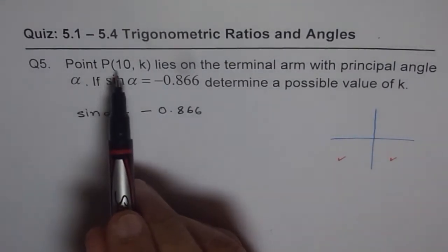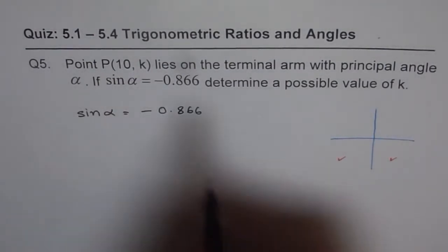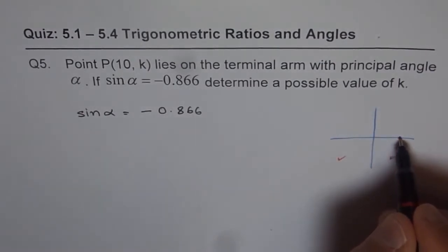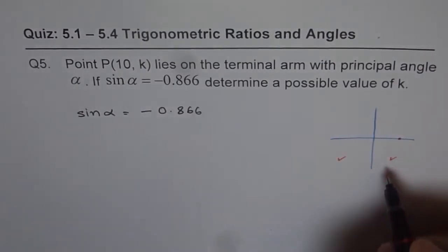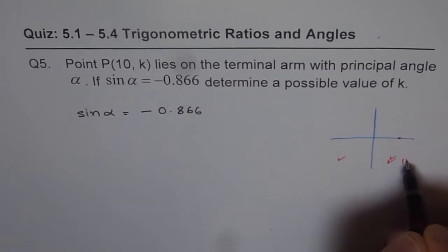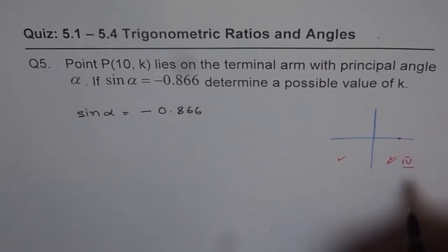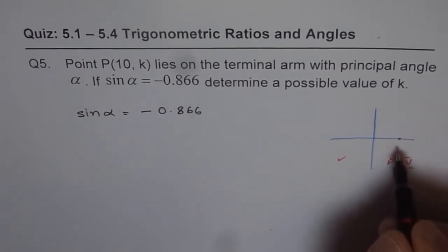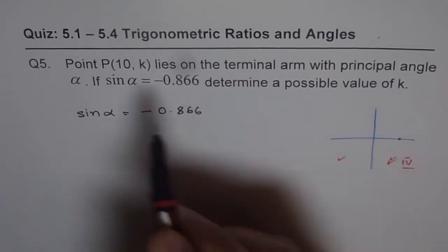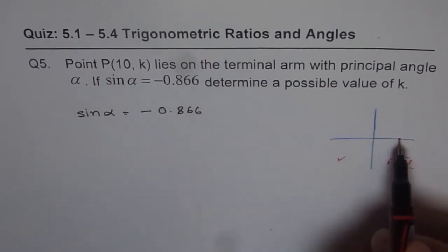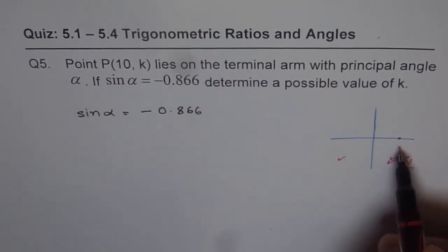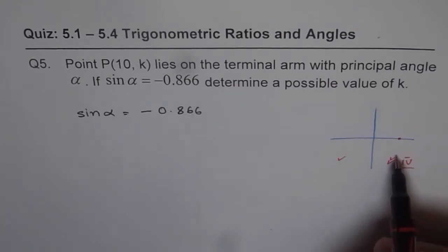The point P is (10, k). Since the x-value is 10, which is positive, we are talking about quadrant 4. In quadrant 4, k has to be negative and x is positive. That is one thing which can give us the value.